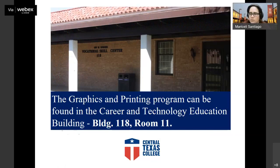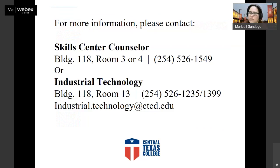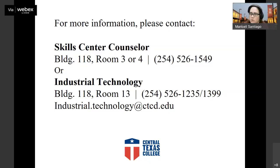The building number changed as well, but graphics and printing is in what we call the CATE Center — the Career and Technology Education Building in room 11. We also have advisors for the CATE Center, and that's the first thing you need to do: complete your admissions and talk to the CATE Center advisor. They'll get you started in the program, and you can also contact the CATE Center advisors to get information on any of the programs available there.